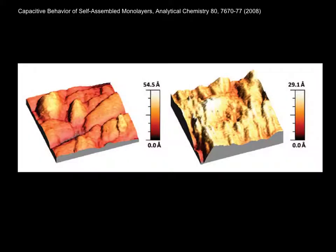What do we mean by macroscopic and microscopic roughness in the terminology of this paper? Here we have two AFM images, 500 nanometers on a side. On the left, you see deep valleys, macroscopic roughness.